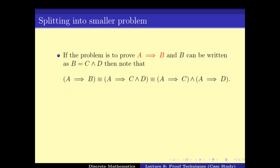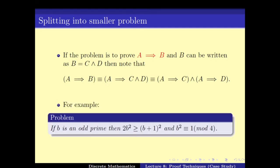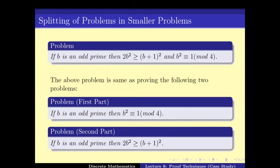Till now we have seen how to split a problem into two smaller parts if the deduction is an AND — that means if we have to prove A implies B, and B can be written as C AND D, then A implies B is the same as saying A implies C and A implies D. We saw this example: if B is an odd prime, then 2B² ≥ (B+1)² and B ≡ 1 mod 4. Applying this splitting, we could divide it into two parts: first, if B is an odd prime then B² ≡ 1 mod 4; and second, if B is an odd prime then 2B² ≥ (B+1)².